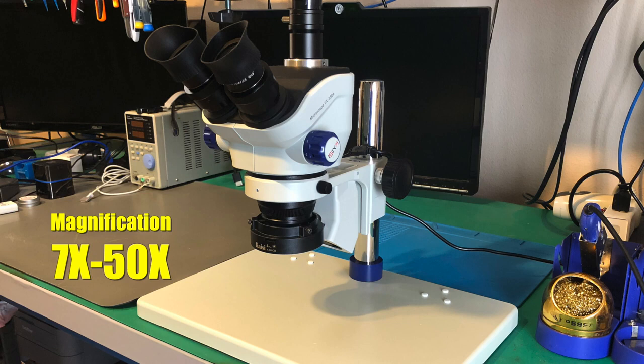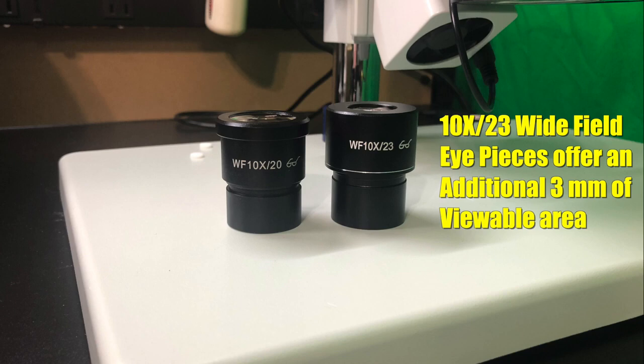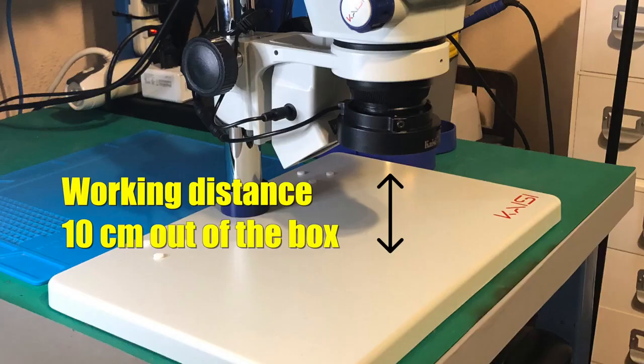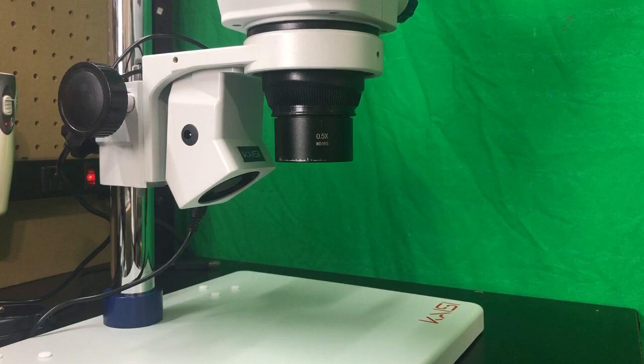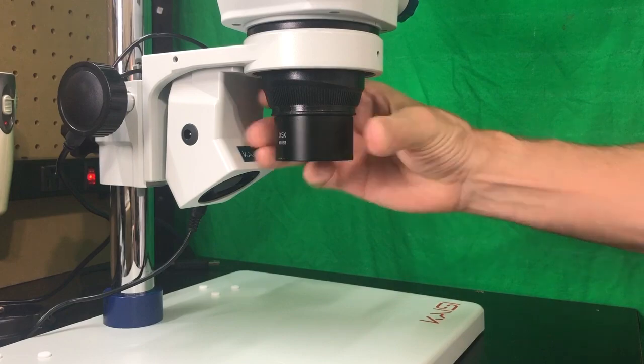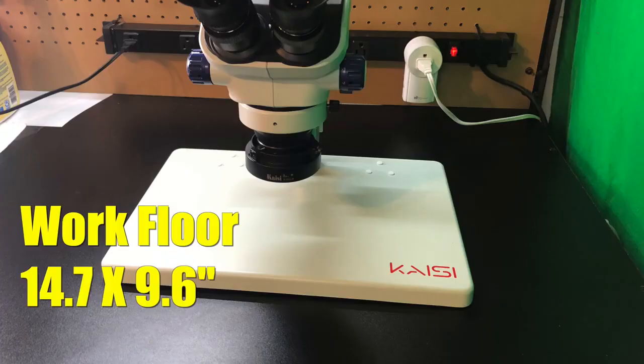The microscope offers a magnification range from 7x to 50x. It's equipped with 10x23 eyepieces that offer an enhanced field of view by an additional three millimeters compared to the conventional 10x20 eyepieces commonly found in most popular microscopes within the same category. I also found them easier to line up due to the smaller lens opening at the top. It has a working distance of 10 centimeters out of the box but is also compatible with my .5 Barlow lens, which I will be using to increase that distance to 15 centimeters. The dimensions of the work floor itself are 14.7 by 9.6 inches.